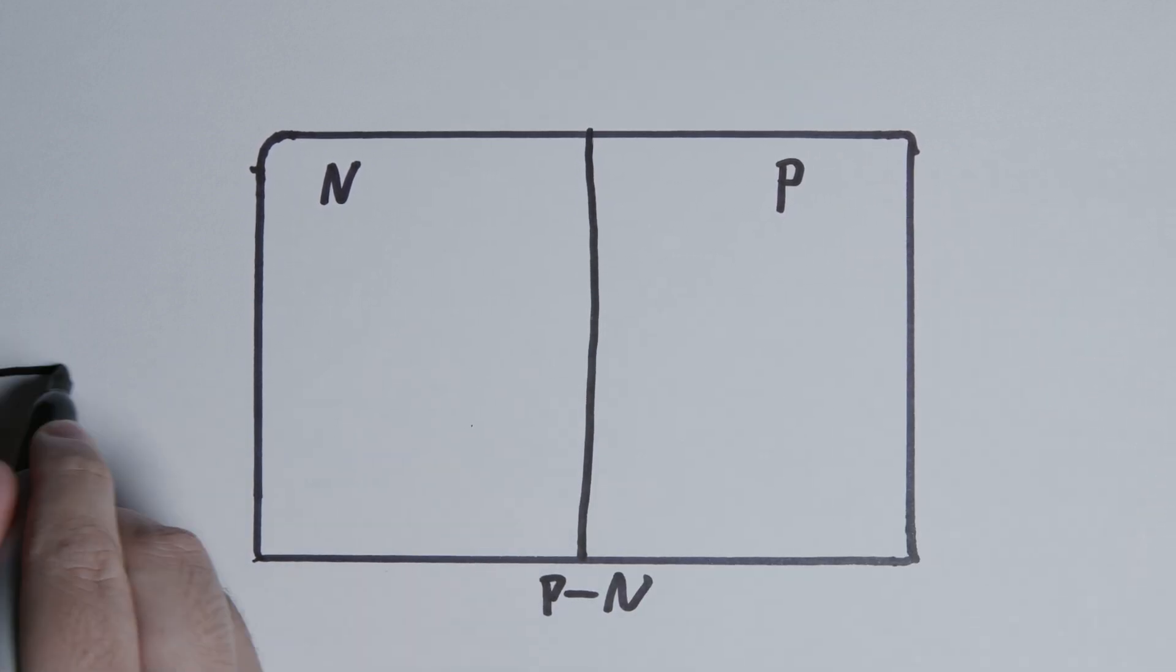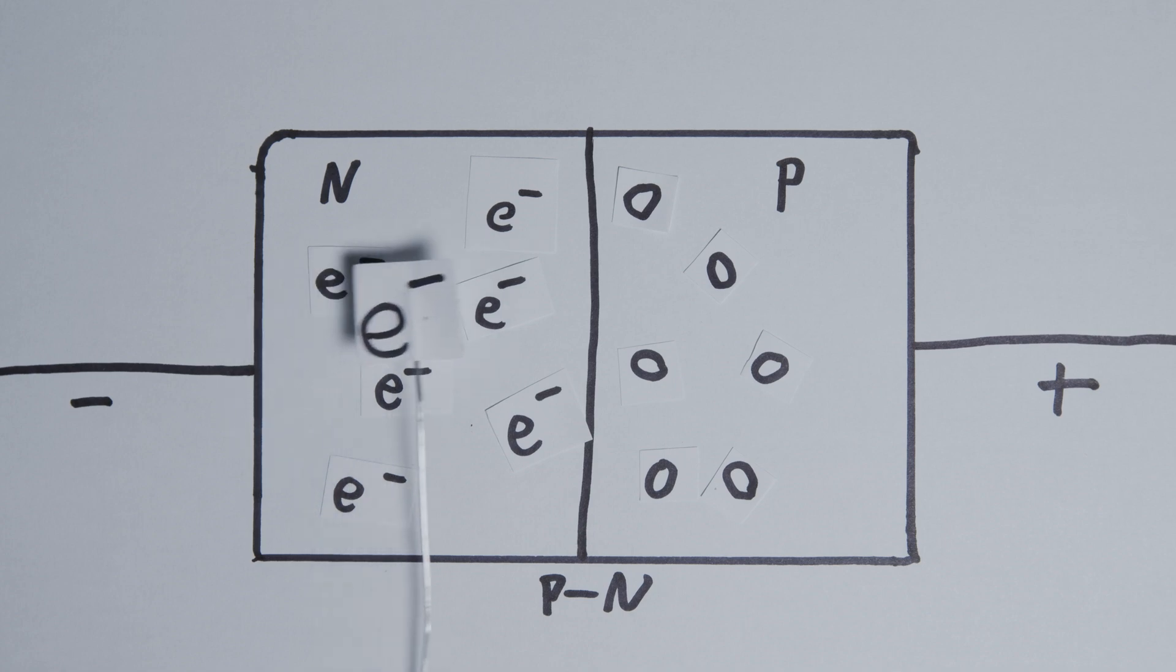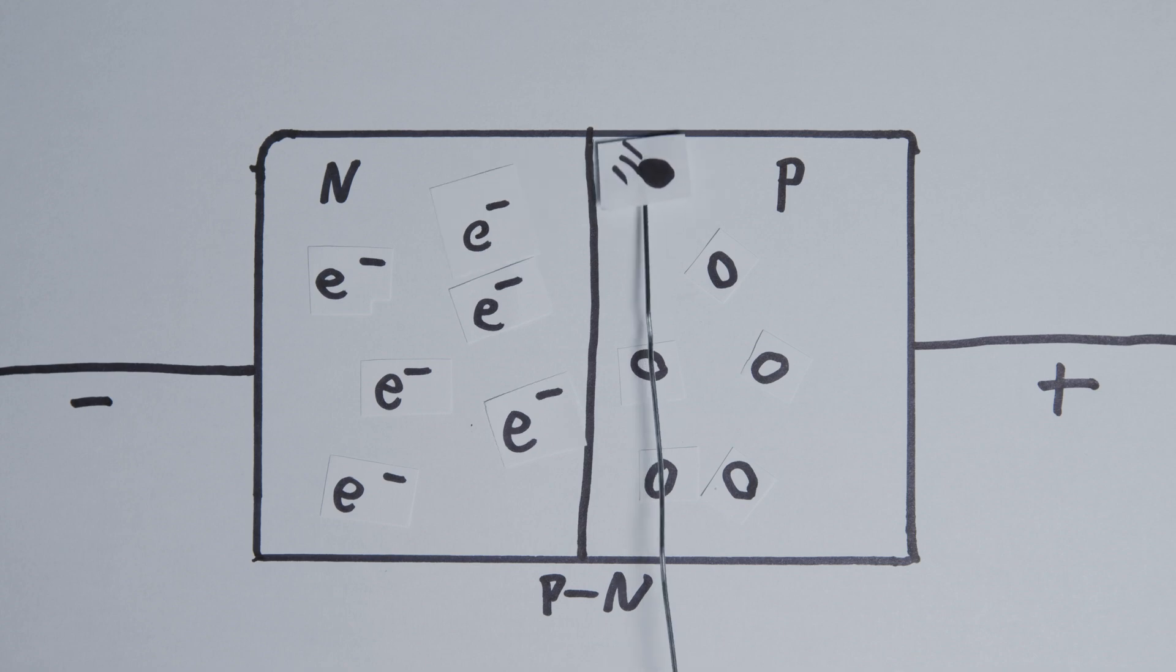When we connect our LED to a power supply, we generate electrons on the n-type side and holes on the p-type side. If we keep increasing the voltage, an electron will jump over and pair with the hole, and the process releases a photon of light.